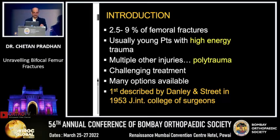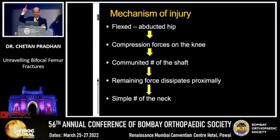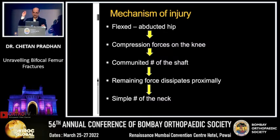There are many options available and described in the literature since Danley and Street first published in 1953. The mechanism is on a flexed and abducted hip: an axial force acting along the shaft produces a comminuted fracture of the shaft, the force further dissipates onto the neck, and by that time it has reduced in intensity, usually resulting in a simple fracture of the neck.